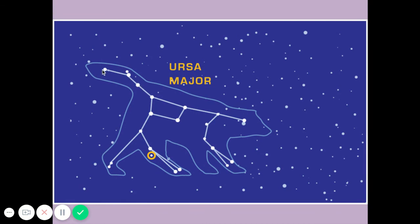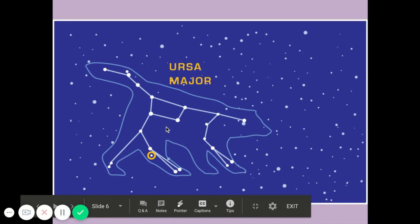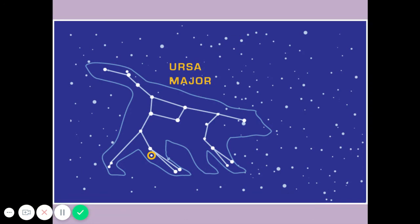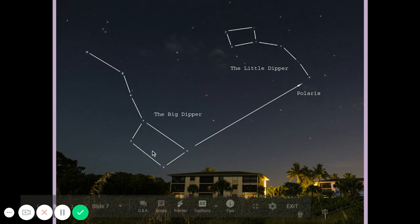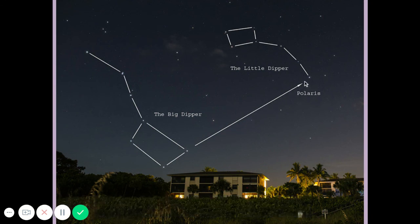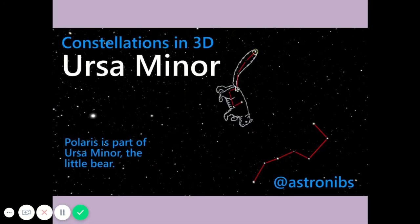Even though Ursa Major and Ursa Minor are bears, they have elongated tails. The two important stars in the Big Dipper point to the north star — probably the most easily recognized constellation in the night sky. If you draw a line between those two stars and extend it, it points to Polaris, the north star, which is the very end star of the Little Dipper's handle. Here's the Big Dipper pointing to the tail of the Little Dipper.